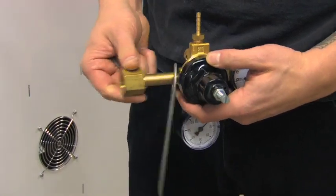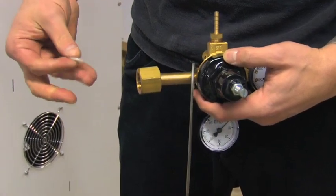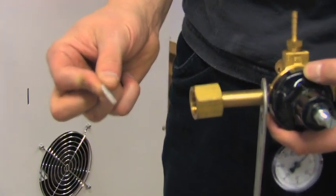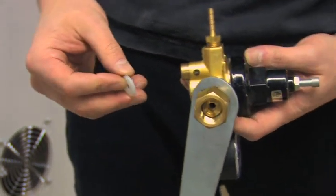Very important, make sure you find your plastic white washer and slide it all the way flush inside your CO2 regulator.